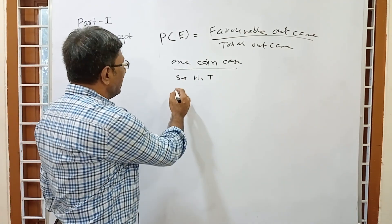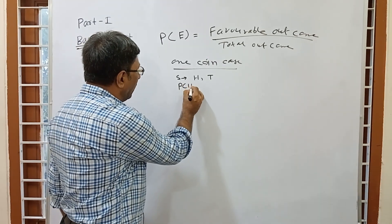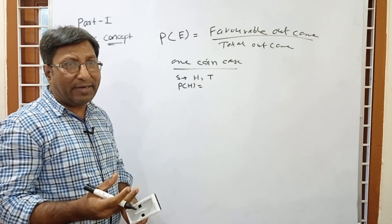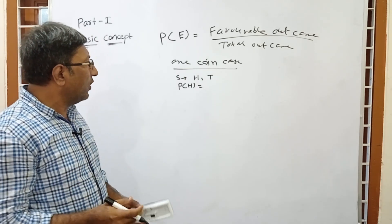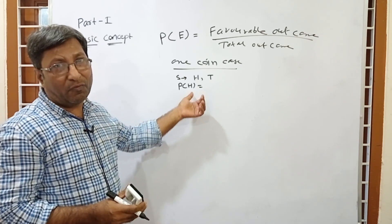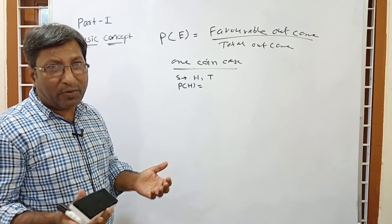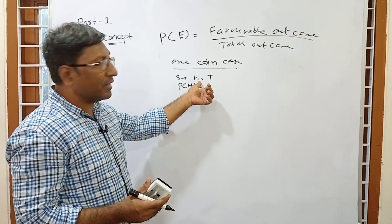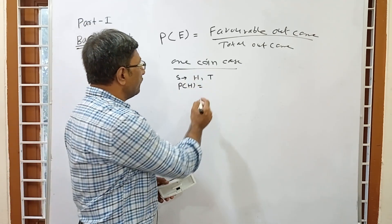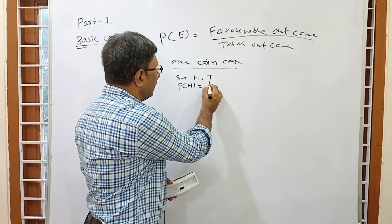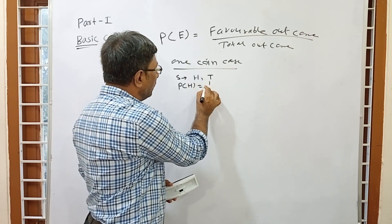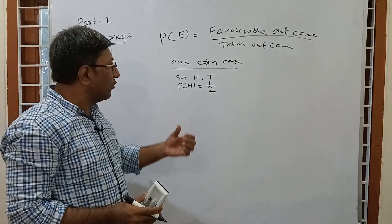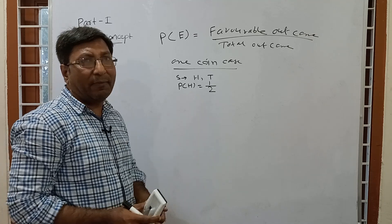Now if we want to find the probability of head — that is, if we throw one coin, what is the probability of getting head? Head is the favorable outcome — what we need to calculate. So the probability of head: head is favorable, and there is only one head. So favorable outcome is 1 and total outcome is 2. The answer is 1/2.